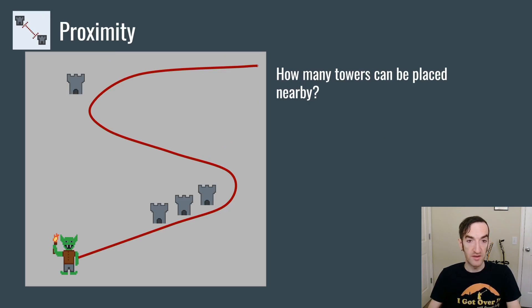Another factor about tower placements is proximity, which is how many towers can be placed nearby. For these towers on the bottom that have three towers next to each other, you can build a combo.